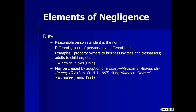We've already talked about the elements of negligence; now let's flush this out in the discussion of tort law. Remember, there are four elements of negligence: duty, breach of the duty, proximate cause, and damages. The plaintiff has the burden of proving all of them by a preponderance of the evidence. First is duty — this is a reasonable person standard, which is the norm. How would a reasonably prudent person act under the circumstances?